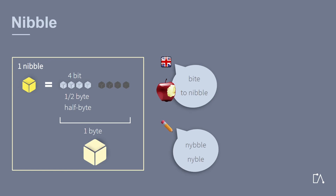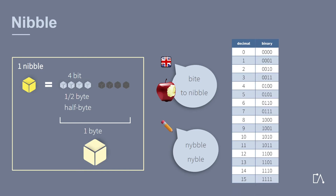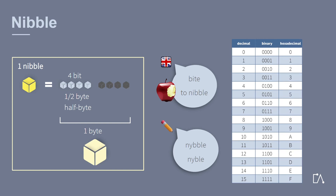A nibble can take a total of 16 values. The value range in decimal numbers is from 0 to 15. In binary form, the values go from 0000 to 1111, or in hexadecimal digits from 0 to f.